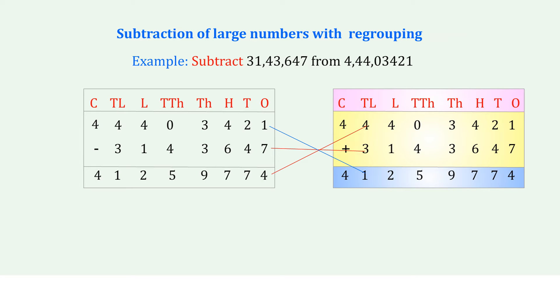Checking — arrange the result 4,1,2,5,9,7,7,4 in the place value table under C, 10 Lakhs, Lakhs, Ten Thousands, Thousands, Hundreds, Tens, Ones. Add the subtracted number 3,1,4,3,6,4,7. We get 4,4,4,0,3,4,2,1, confirming the original minuend.